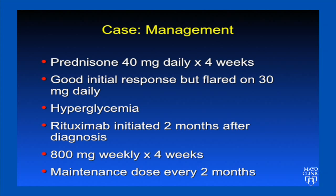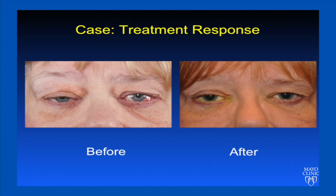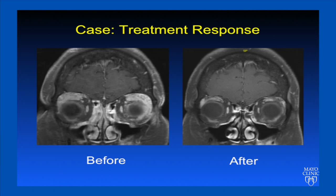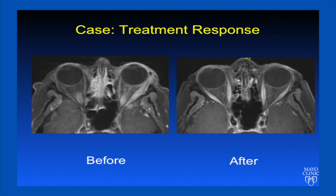The patient was treated with 40 milligrams of prednisone daily for four weeks as initial therapy. Although she had a good initial response, she flared on 30 milligrams daily, and prednisone also exacerbated her hyperglycemia. She therefore was changed to treatment with rituximab, started two months after diagnosis. Her initial treatment was 800 milligrams weekly for four weeks, followed by a maintenance dose every two months. This slide illustrates her treatment response, and we can see that the soft tissue swelling has markedly improved, as has the conjunctival injection and the left proptosis. Perhaps more impressive is her radiographic response, with complete resolution of the soft tissue swelling superiorly and normalization of the left lateral rectus muscle.